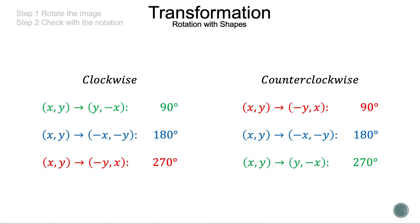For 270 degrees clockwise, the point XY becomes negative Y X. For counterclockwise rotations, the notation is very similar — 180 degrees is the same, and 90 degrees and 270 degrees have flip-flopped from clockwise. That is because when we add each pair of clockwise and counterclockwise values, they give us 360 degrees, a full circle, so where we started is where we ended up.